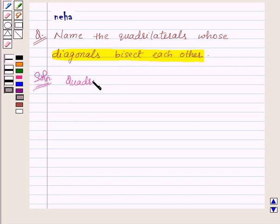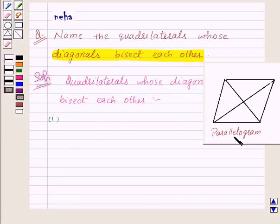Let's find out the first one. Now here in this figure we have made a parallelogram. Let's recall the definition of a parallelogram. A parallelogram is a quadrilateral with each pair of opposite sides parallel and equal.